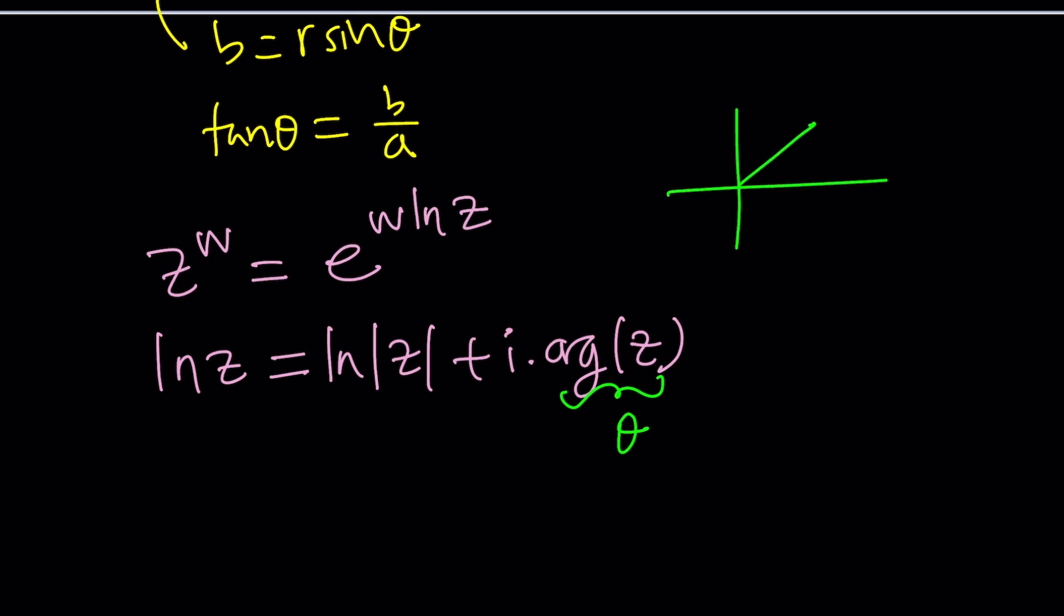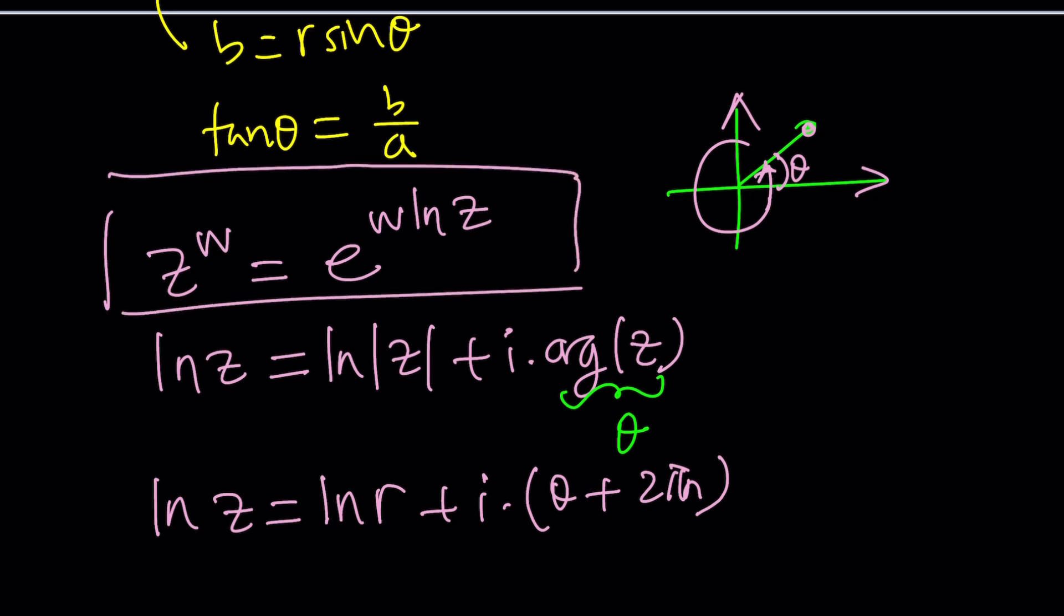In this case that happens to be theta, but you've got to be careful because theta is the principal argument. And then of course you're allowed to add multiples of 2 pi because when you add 2 pi to it, you're going to realize that it brings you to the exact same point. So we write this as ln r plus i times theta plus 2 pi n, provided that theta is the smallest angle which is called the principal argument. This will be helpful because we're going to express it using Euler's number and the natural log of a complex number.